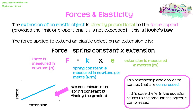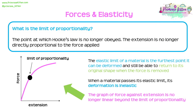If we plot force against extension, and Hooke's Law is being obeyed, we expect to see a direct proportion — a straight line through the origin with a constant gradient. We can calculate the spring constant by finding the gradient of this line: the change in y over the change in x. The limit of proportionality is the point at which Hooke's Law is no longer obeyed and extension is no longer directly proportional to the force applied. Beyond this point on the graph, the linear relationship breaks down.